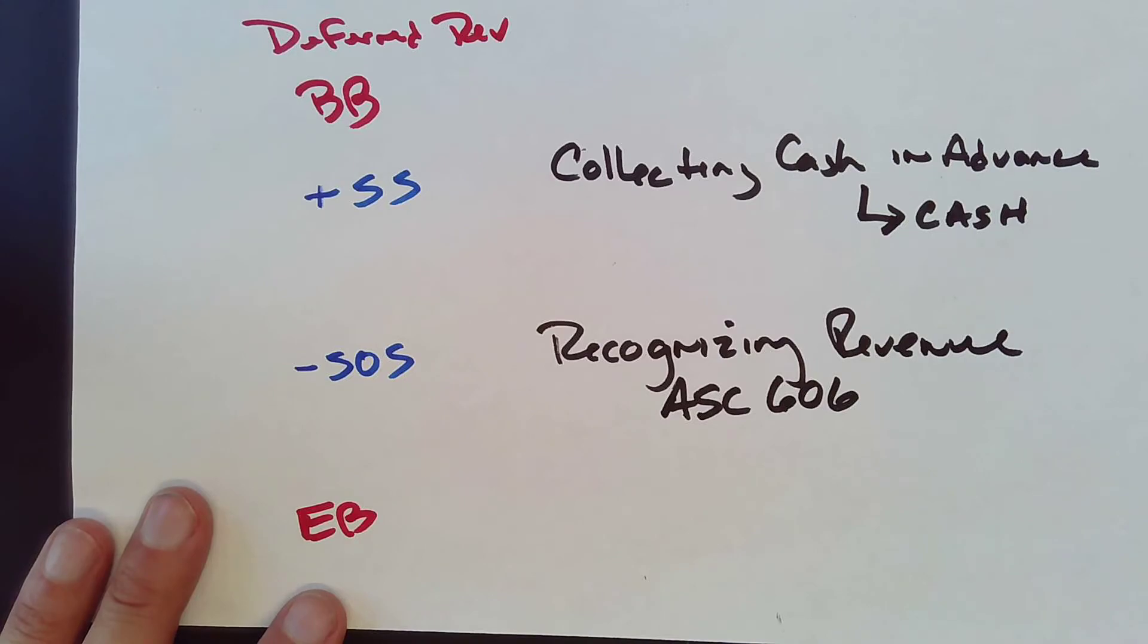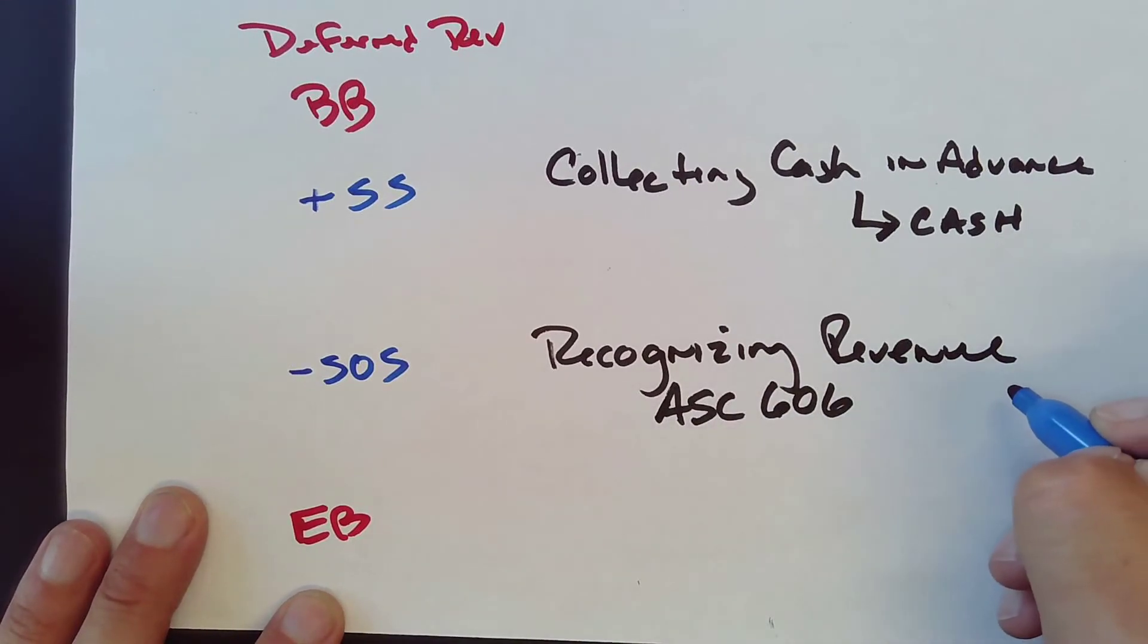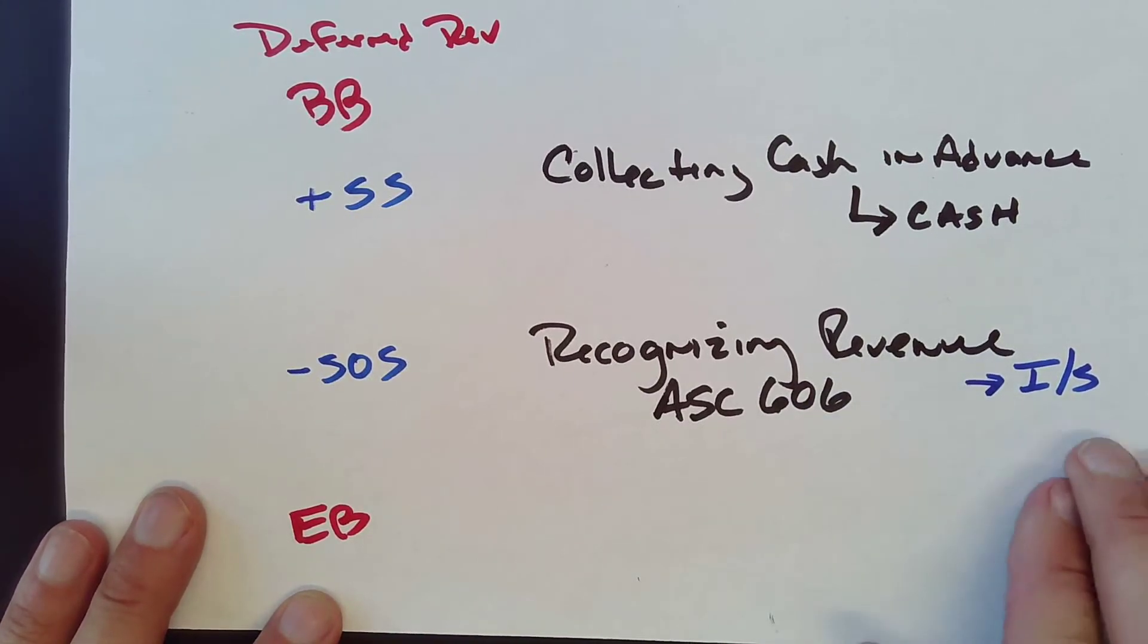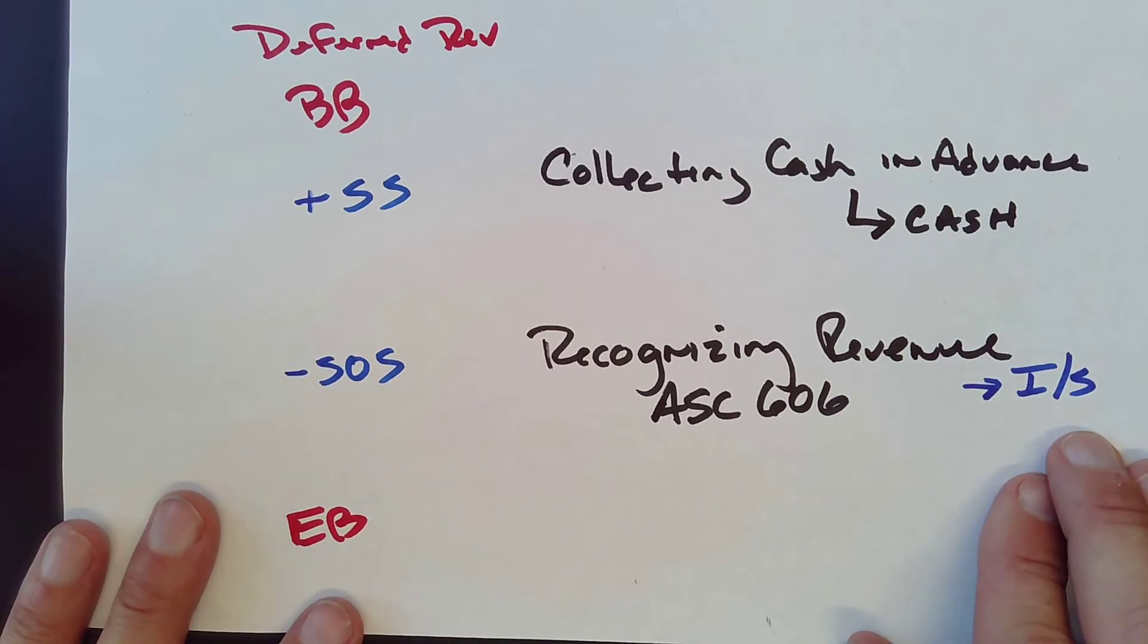This is going through the Income Statement. And we keep coming back to the Income Statement. There's got to be something going on here. And there is.